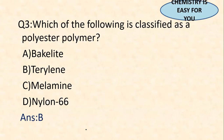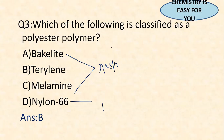Then: which of the following is classified as a polyester polymer? Option B, terylene, is the answer. Bakelite and melamine are both formaldehyde resins — formed by the reaction between formaldehyde and another compound. Nylon 6 is a polyamide. The only option left is polyester, and terylene is a polyester polymer. Remember: bakelite and melamine are resins, nylon 6 is a polyamide (PA).